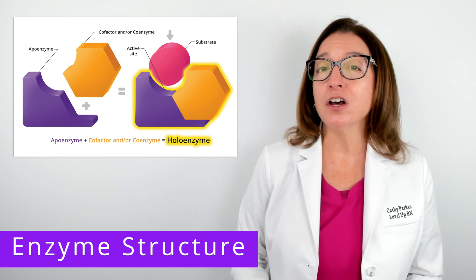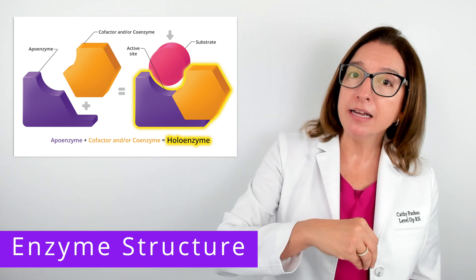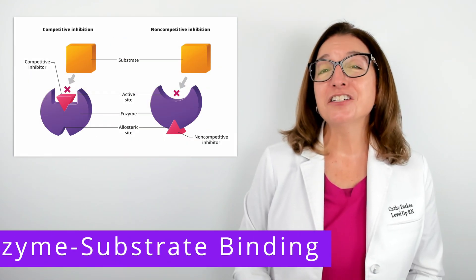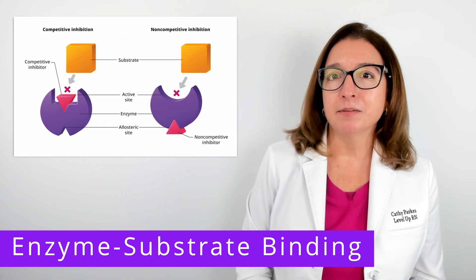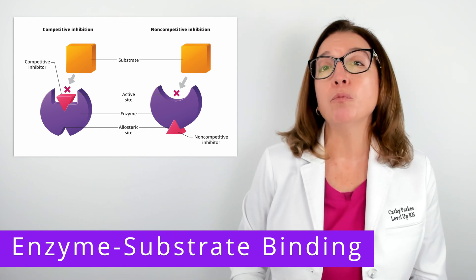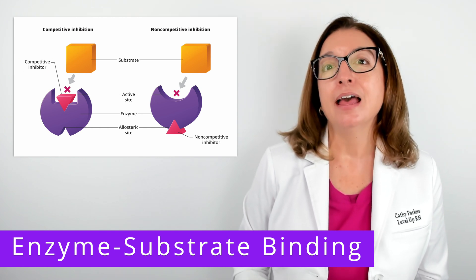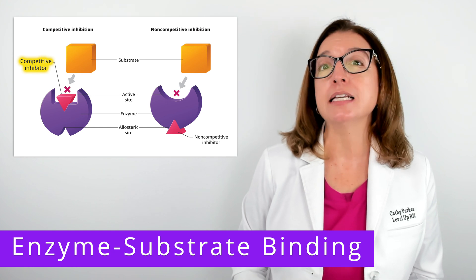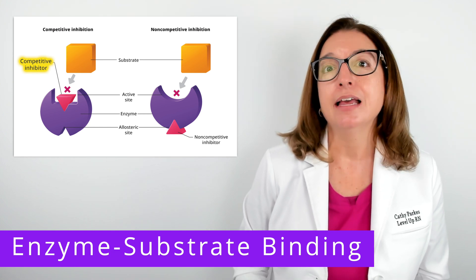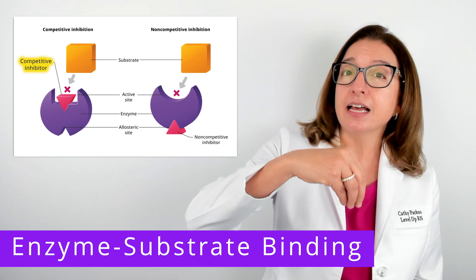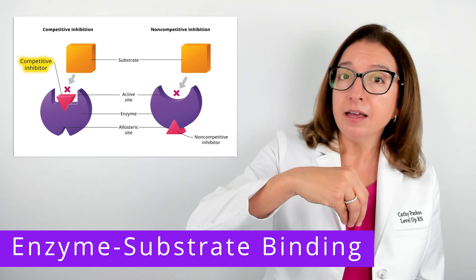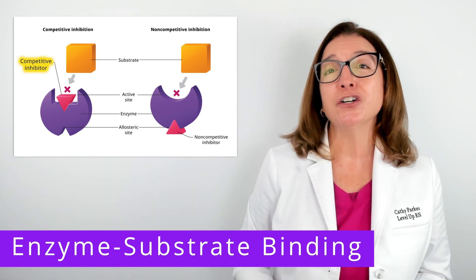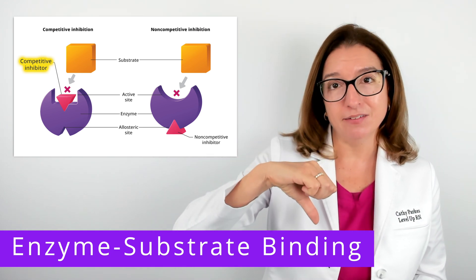The location on the enzyme where the substrate binds is called the active site. A competitive inhibitor is a molecule that is similar to the substrate. It binds to the active site of the enzyme, which blocks the substrate from binding, and this in turn decreases enzyme activity.